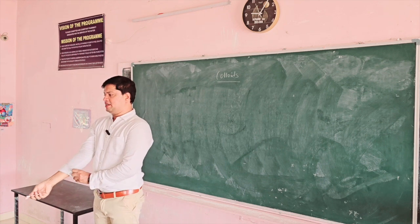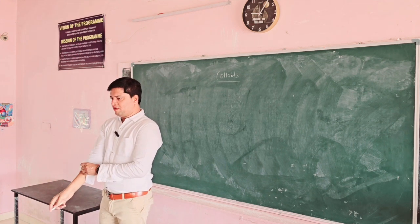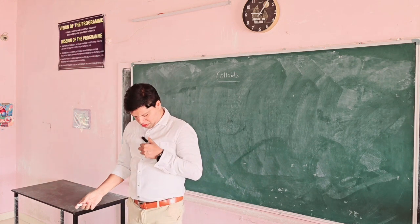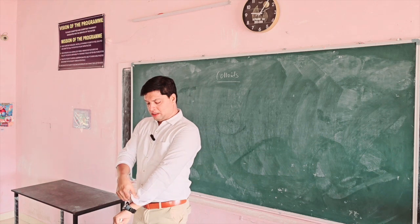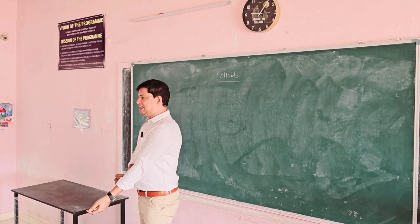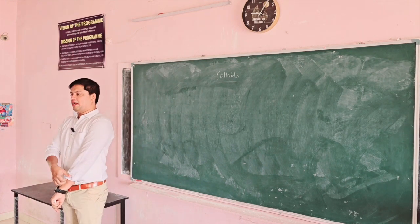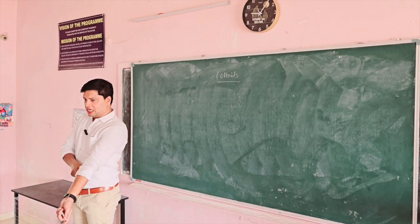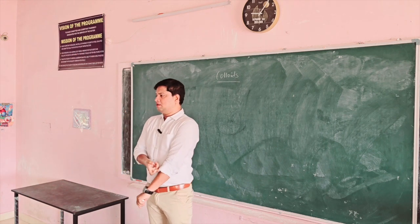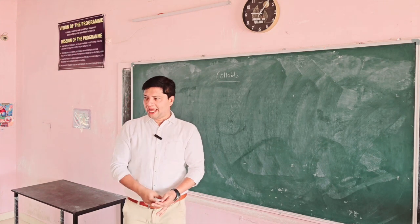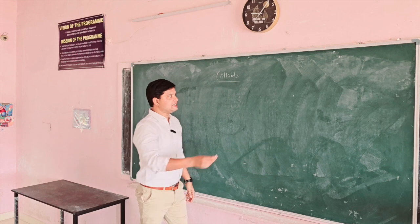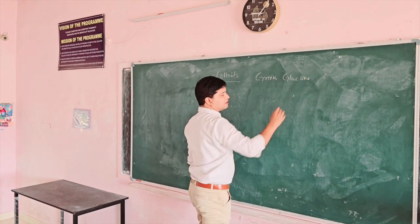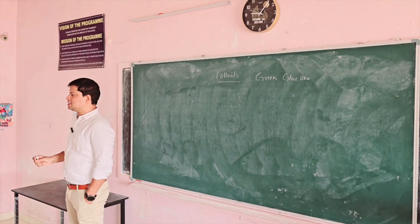First, we should know why the name is given. In case of colloids, we have lyophilic colloid. Lyo means solvent, philic means loving. So we have a lyophilic colloid which is solvent-loving. Example for lyophilic colloid is acacia in water, gum in water. If you add gum in water, it will become glue-like. Hence the name colloid — in Greek, colloid means glue-like.